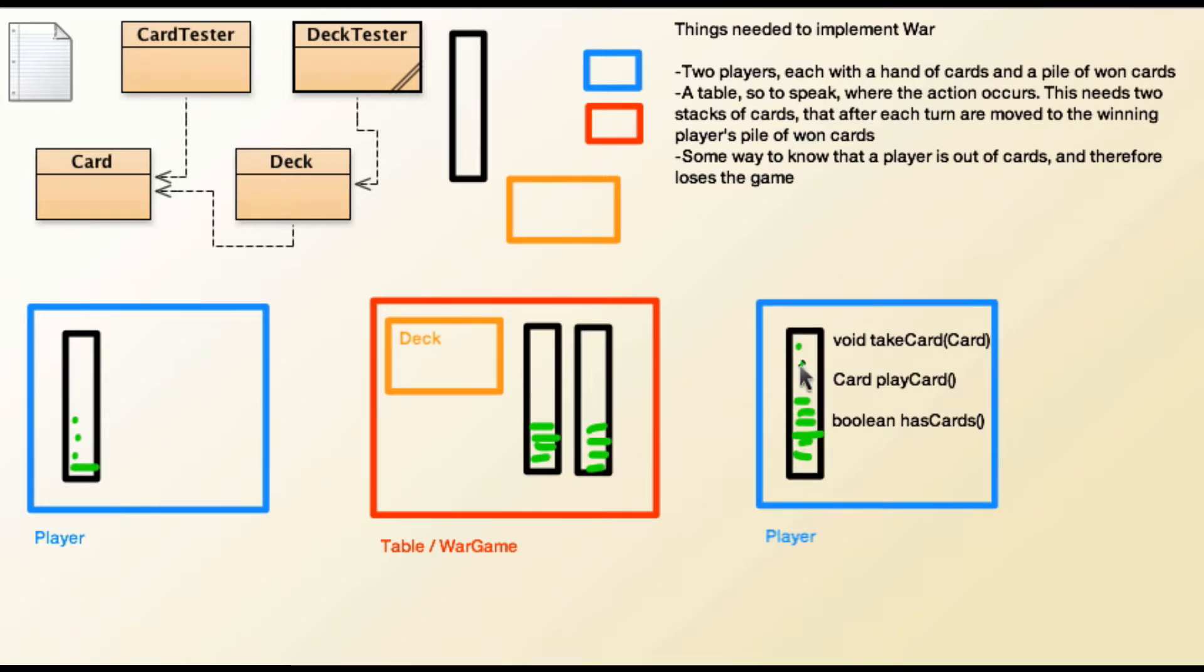So what you could have in this class is a method that will, with two loops in it, one that will empty this array list and one that will empty this array list, and inside each of those loops you're just, you have an if statement to say whether you're going to call the play card, the take card method of player, this player object or this player object. So let's say this player object won.